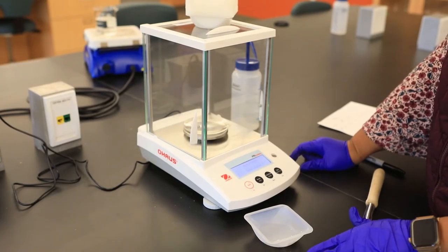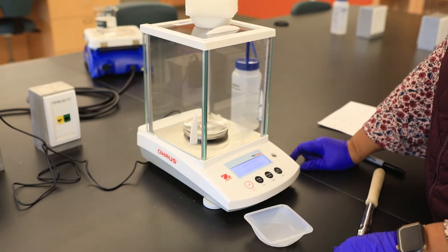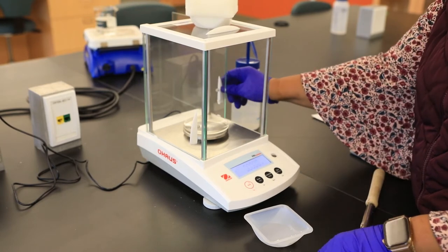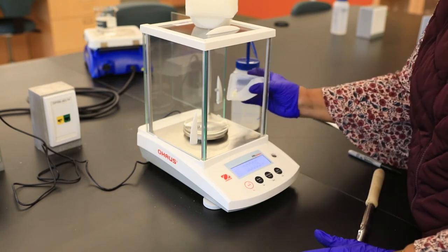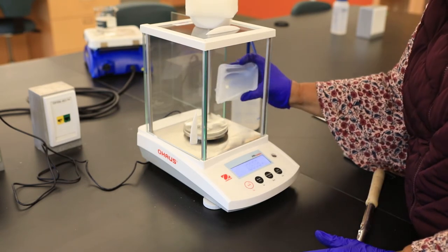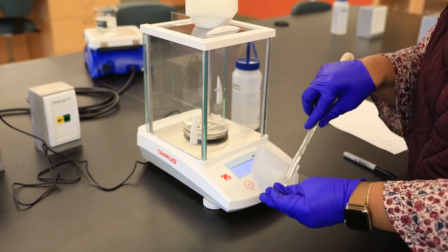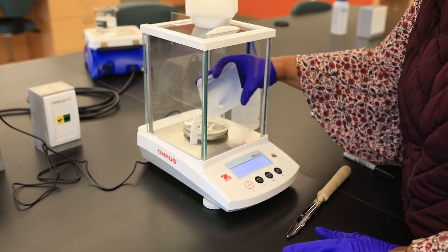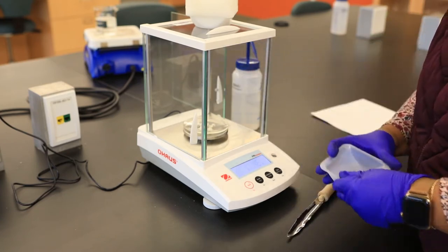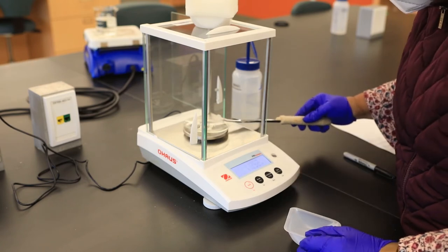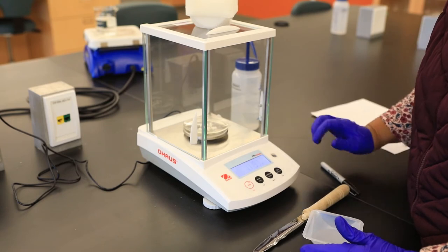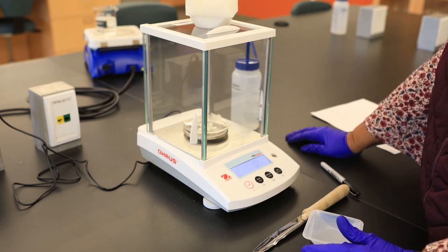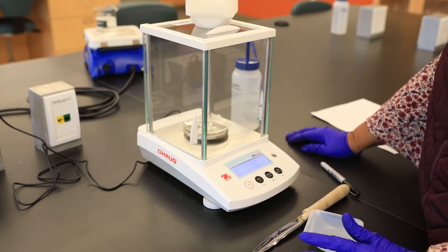The goal in this section is to determine the exact mass of casein that was extracted from the dry milk. I have zeroed or tared the balance with our watch glass. Now I'm going to add the casein, which is almost dry. Based on this, we have isolated 1.119 grams of casein.